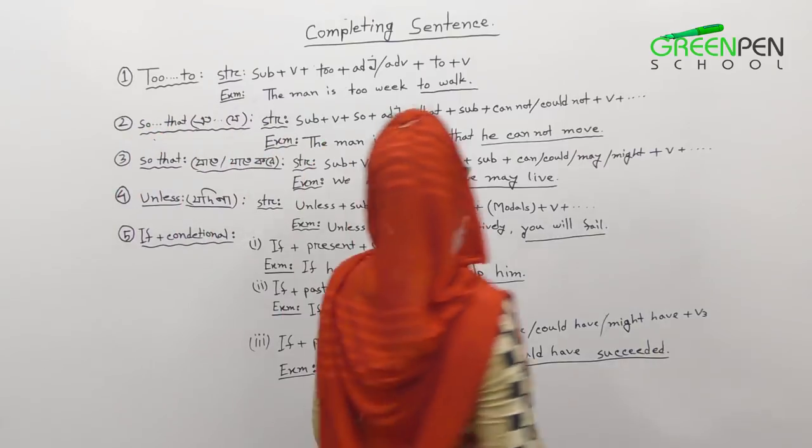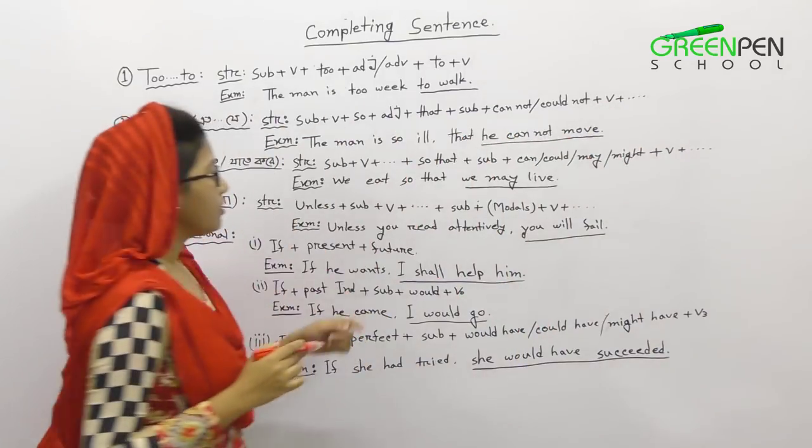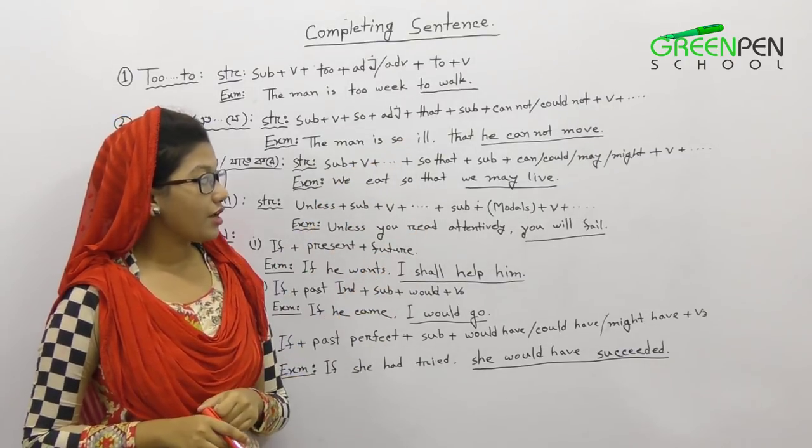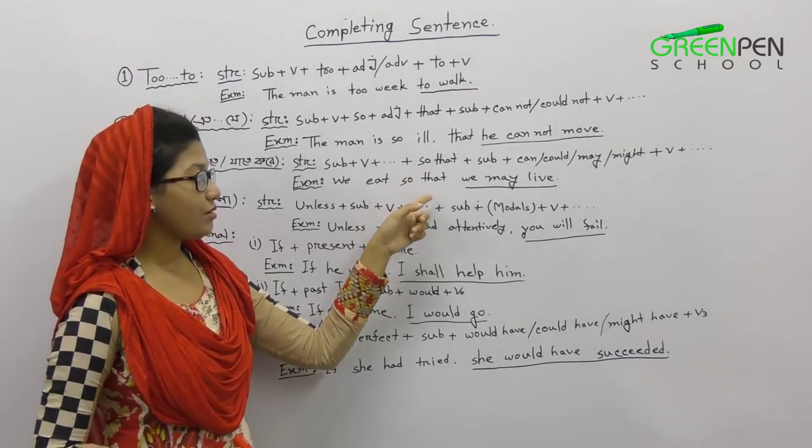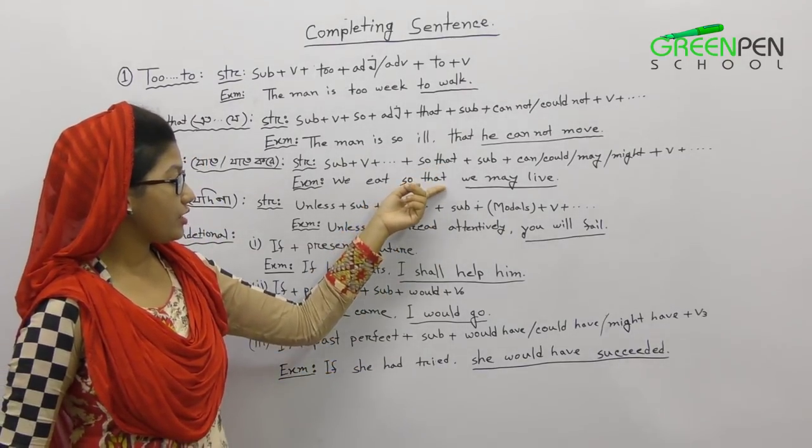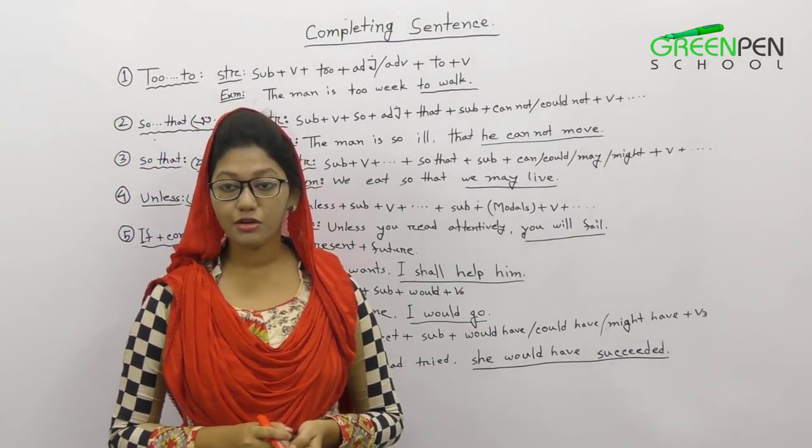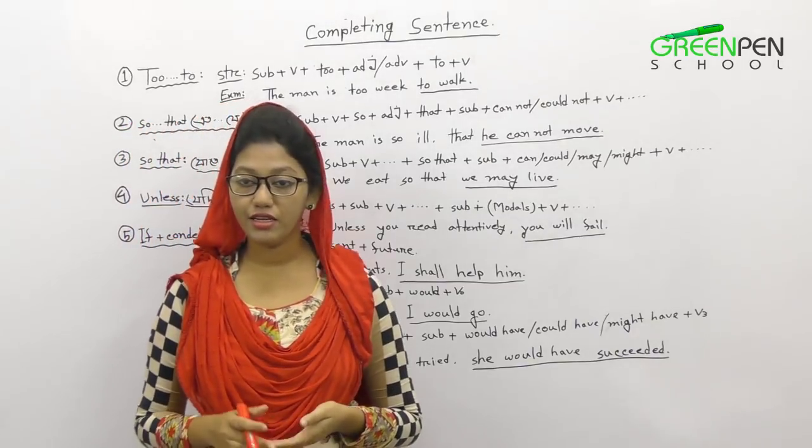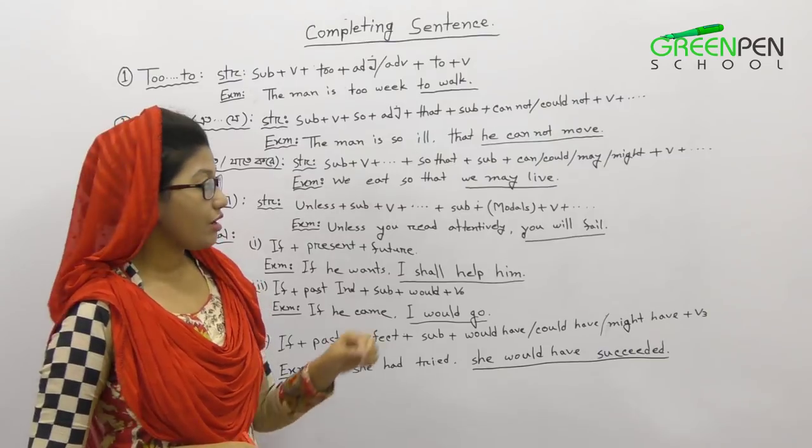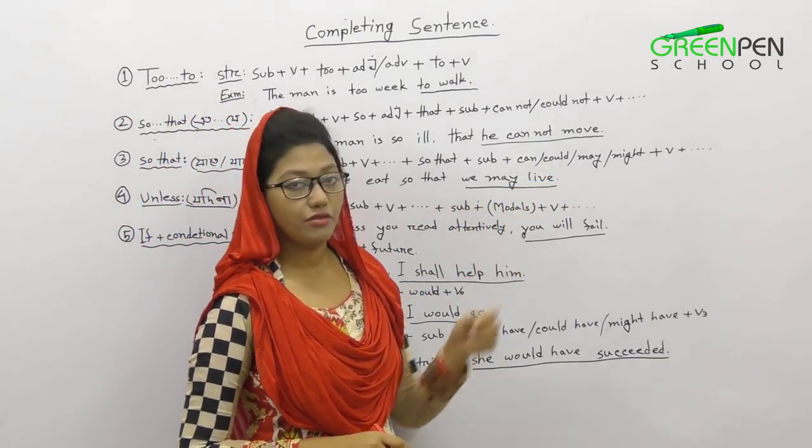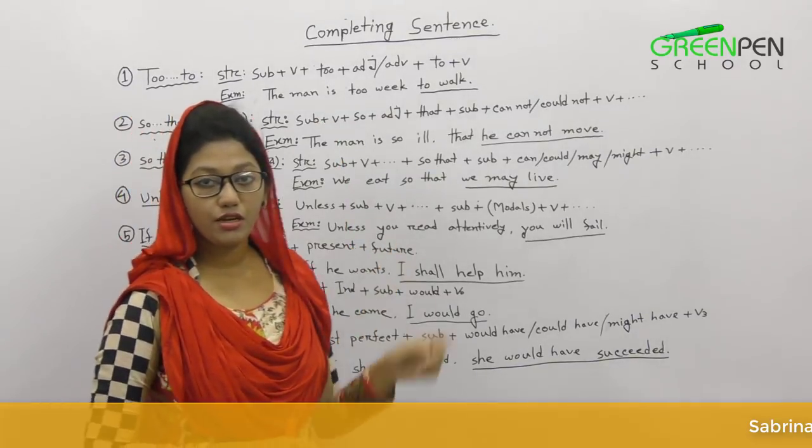If we want to collect the numbers, we can collect them. The structure is subject plus verb plus extension plus so that plus subject plus can, could, may, might plus verb. For example, subject position is we, and verb is eat, so that we may live. So we eat so that we may live. This sentence will be completed in the first place.